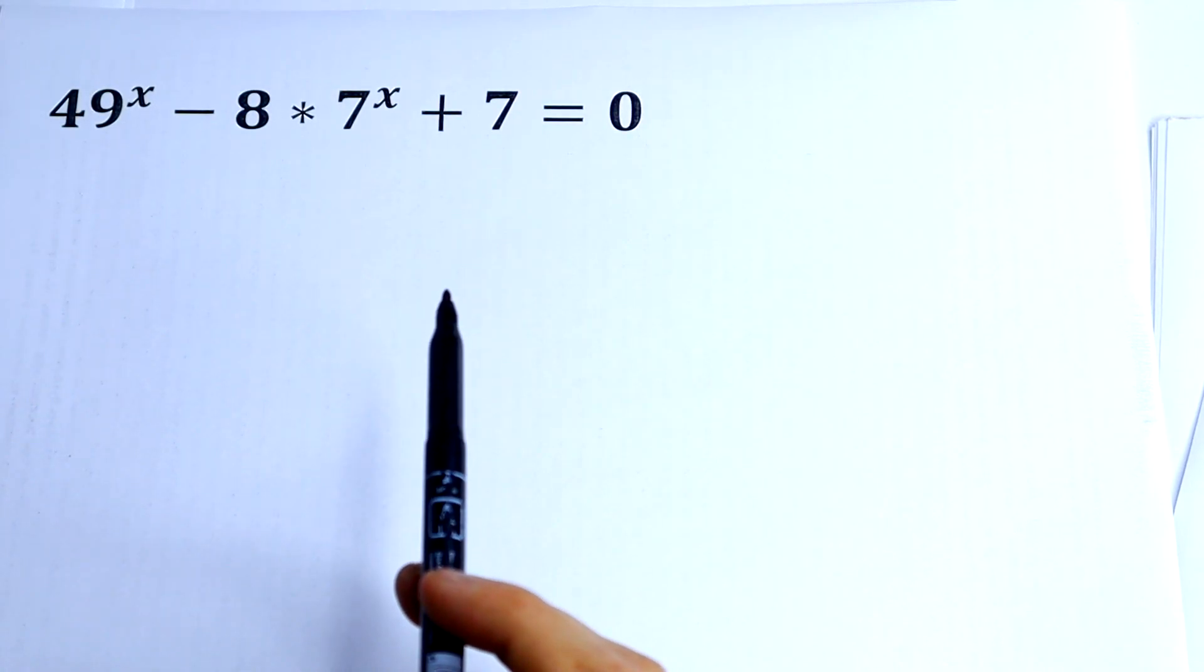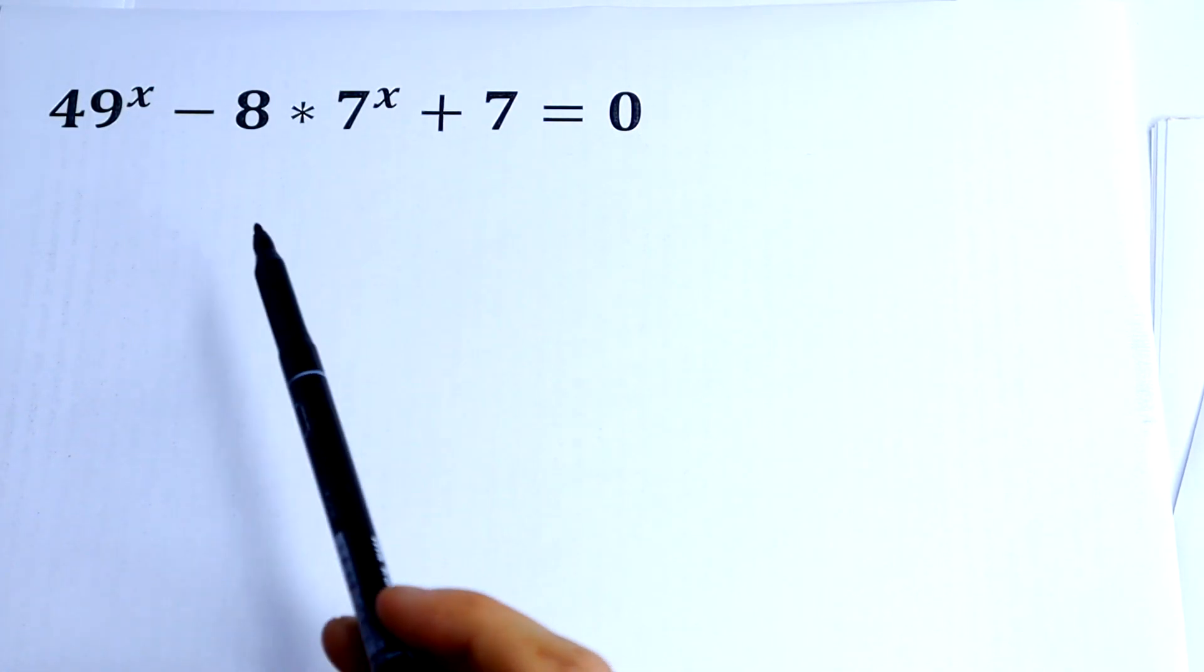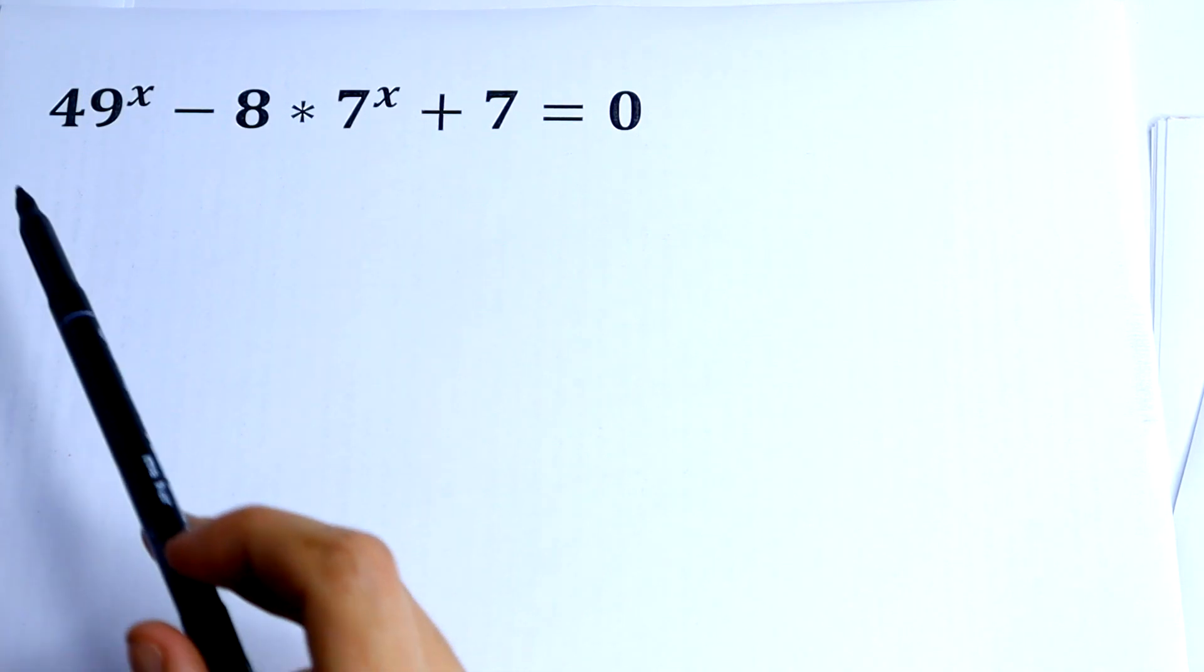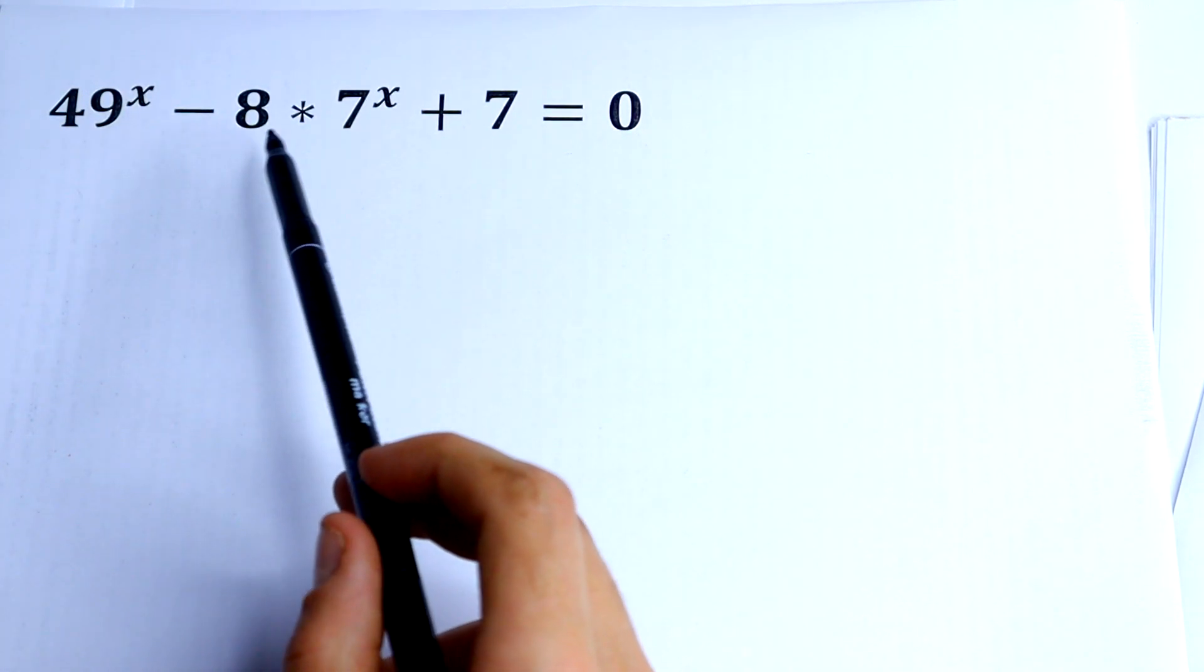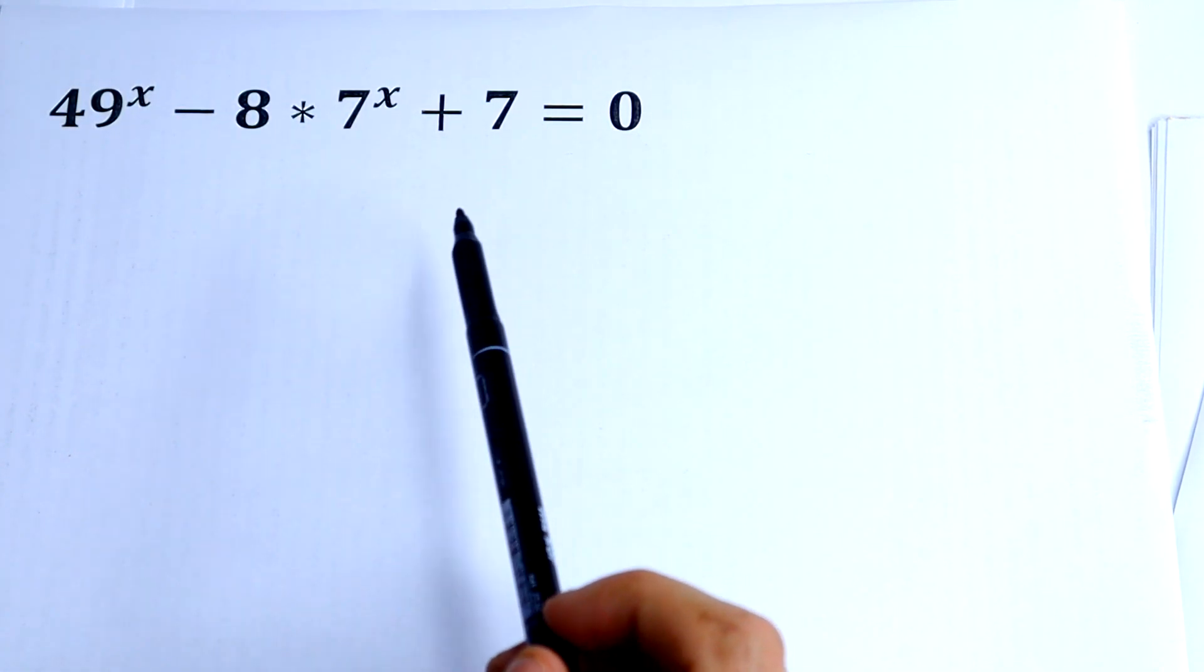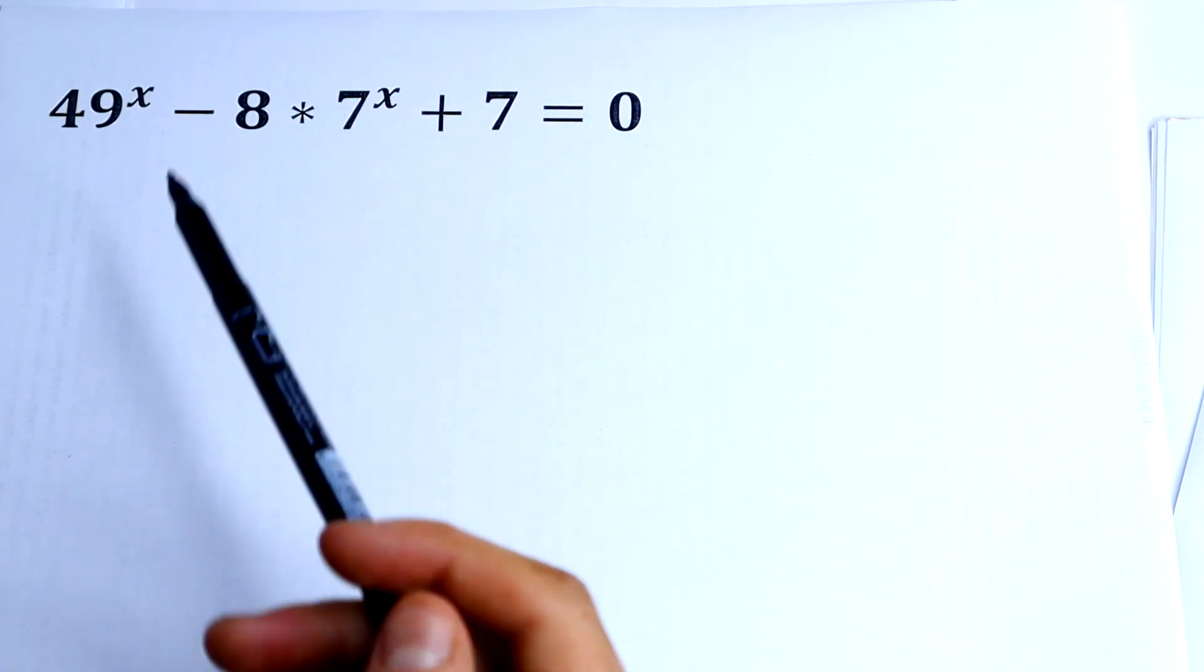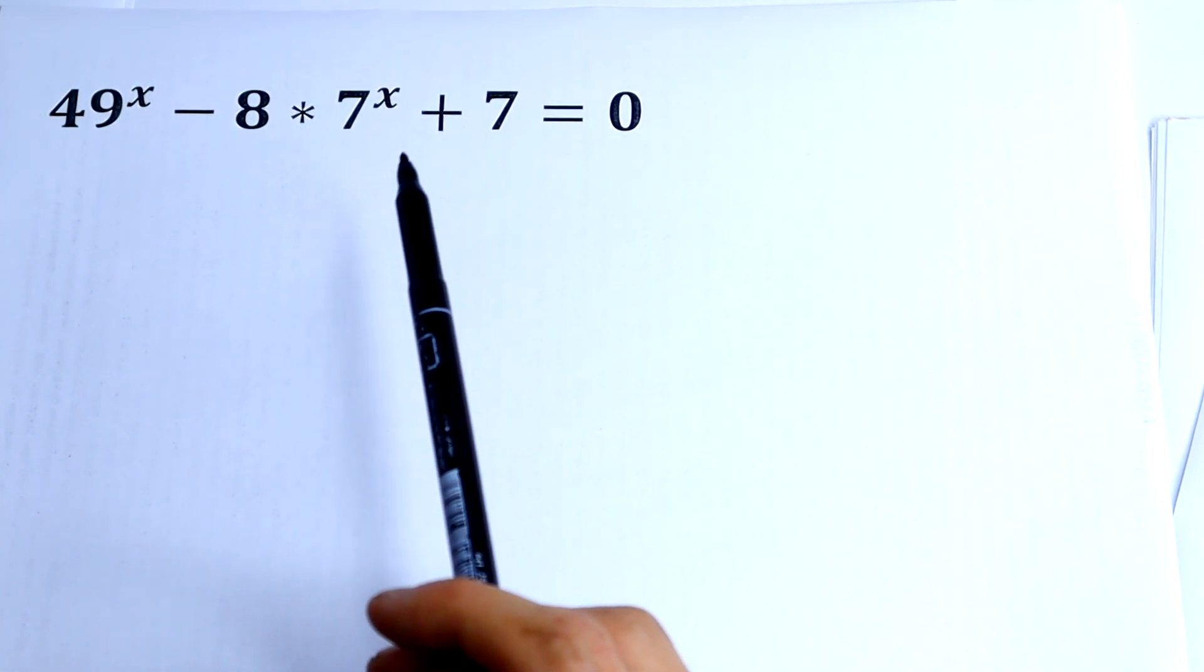Hello math lovers and welcome back to Math Mood. Here we have an interesting equation: 49 to the power x minus 8 times 7 to the power x plus 7 equal to 0. If you know the answer, write your answer right now in the comment.